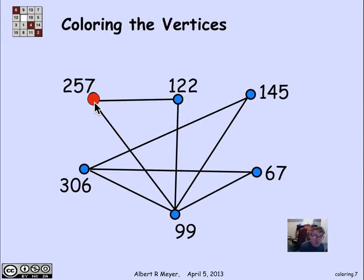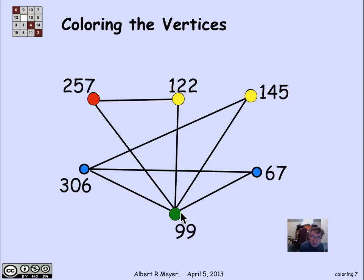Let's try coloring this graph. I'll color 257 red, 122 yellow, and 99 green. There's no loss of generality here because these three are on the ground at the same time, reflected by the fact that they form a triangle — I have to use three different colors since each is adjacent to the other two. Next, color 145 yellow since it's not adjacent to a yellow vertex. Then with another triangle, the sensible choice is red. Then I color another vertex black — but here I'm stuck: I'm adjacent to yellow, black, and green vertices, so I need a fourth color.